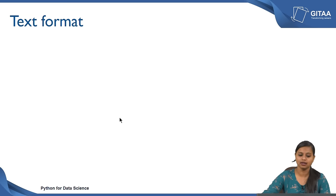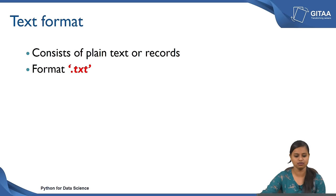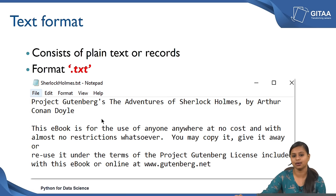Next we will move on to text format. Till now we have been covering spreadsheet formatted files — comma separated values and Excel sheets. Now we are going to move to text formats. Text formats basically consist of plain text or records. Whatever data which consists of plain text or records we call text formatted data, and the format would be with a .txt extension. Whenever you save any file with the .txt extension, that becomes text formatted data. A text file can also contain only plain text, but in this lecture we will focus on how to read data from formats like CSV and Excel.